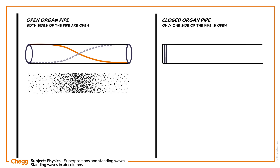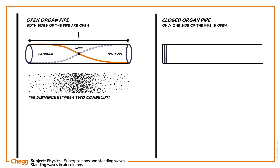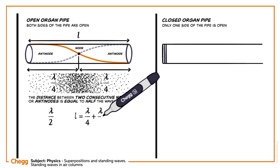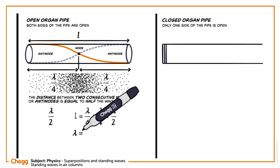First harmonic frequency. In this figure, the length of the open organ pipe is l. As we can see, antinodes are formed at the open ends, and exactly at the middle, one node is formed. Recall that the distance between two consecutive nodes or antinodes is equal to half the wavelength, λ/2, and the distance between a consecutive node and antinode is one fourth of the wavelength, λ/4. Thus the length of the pipe l equals λ/4 plus λ/4, which equals λ/2, and therefore λ equals 2l.